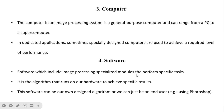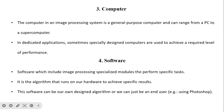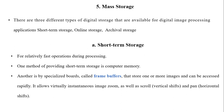Software includes specialized image processing models to perform specific tasks. It is an algorithm that runs on our hardware to achieve specific results. This software can be our own designed algorithm, or we can just be an end user — for example, using Photoshop, CorelDRAW, or Paint to modify an existing captured image.